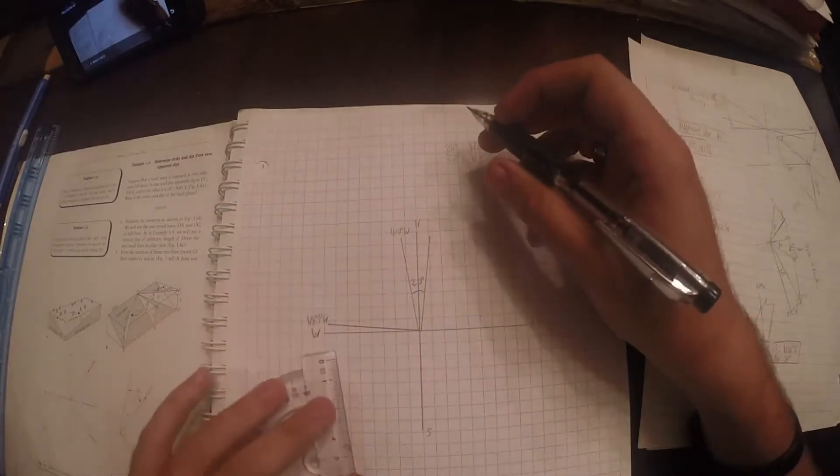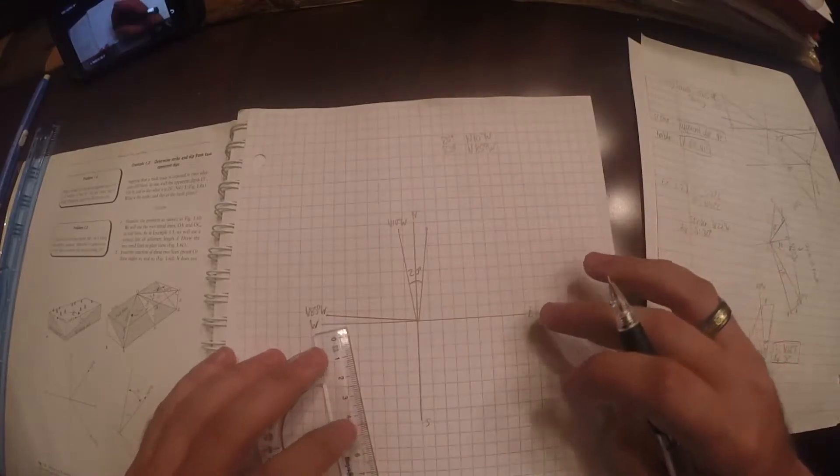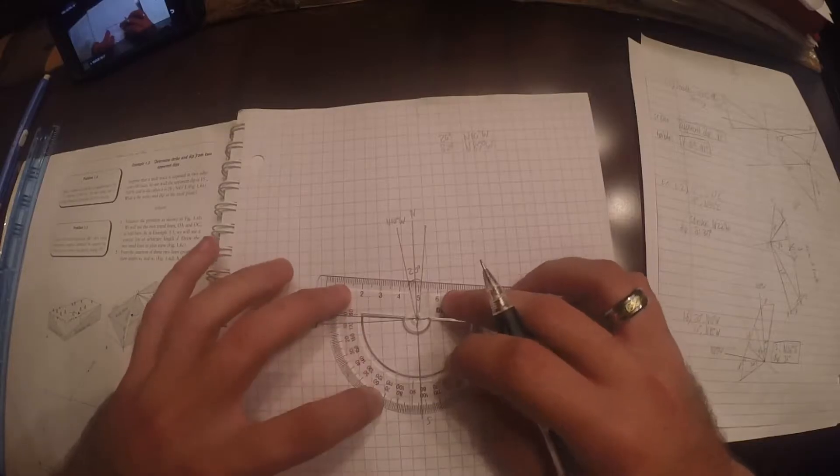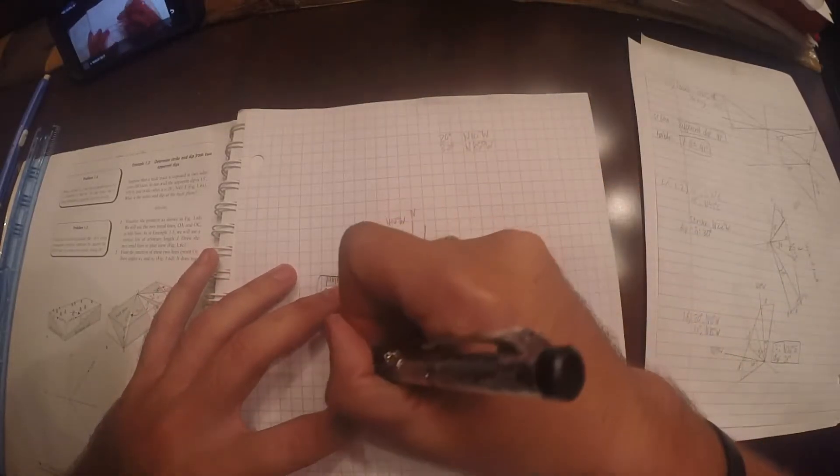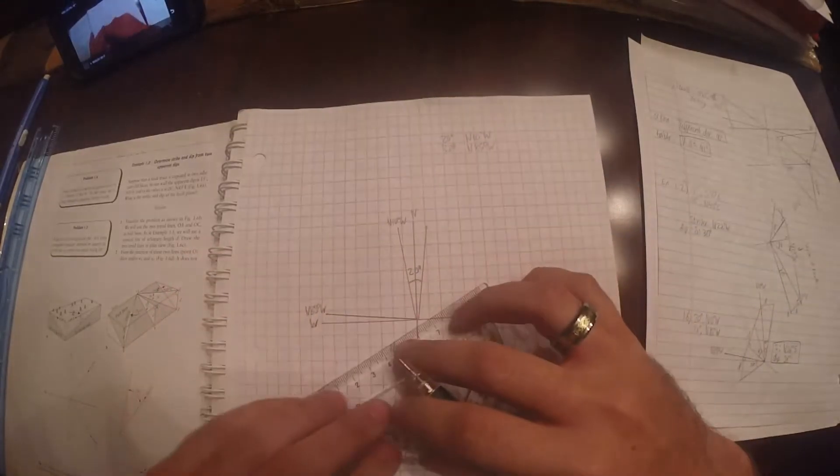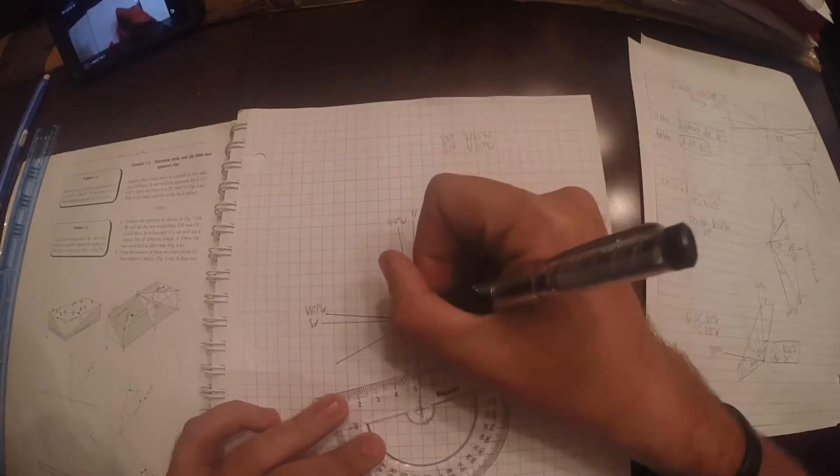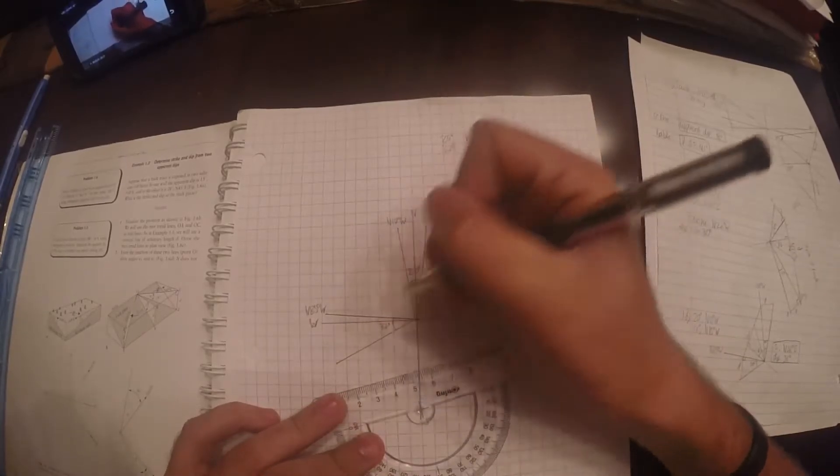So draw a line from there. Whoops! That, okay. So that is 20 degrees. And then from this one, 32.